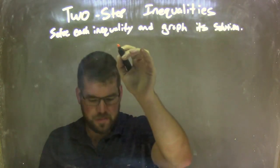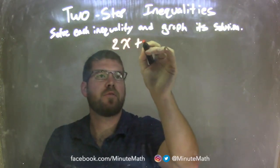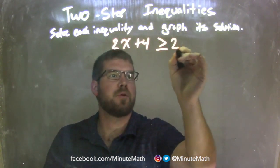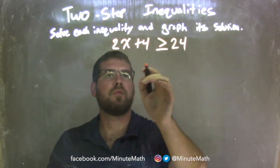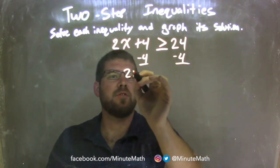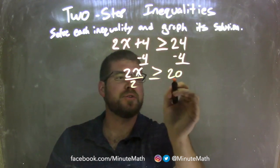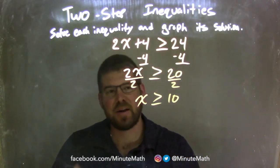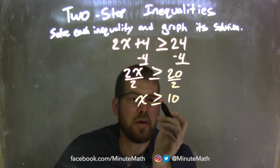So if I was given this inequality: 2x plus 4 is greater than or equal to 24. To solve that, I'm going to subtract 4 from both sides, leaving me with 2x is greater than or equal to 20. Then I divide both sides by 2, leaving me with x is greater than or equal to 10. Now x is isolated.